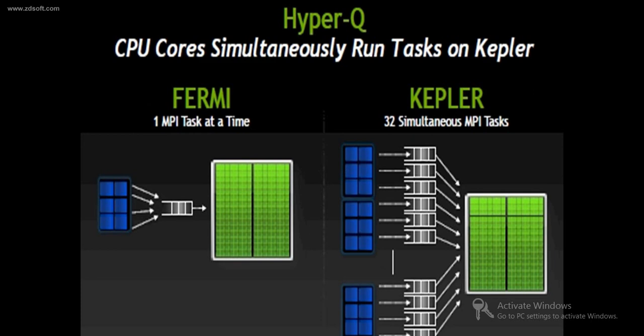Let's make it more clear. When we write code in OpenMP or MPI, we give instructions to execute the program on a particular core. Suppose we have four cores and four computational tasks in a program. Using the HyperQ concept, each core of the CPU can give instructions to the GPU for executing the computational part simultaneously, and increase GPU utilization. The main purpose of designing this feature is to provide easy mapping with MPI.